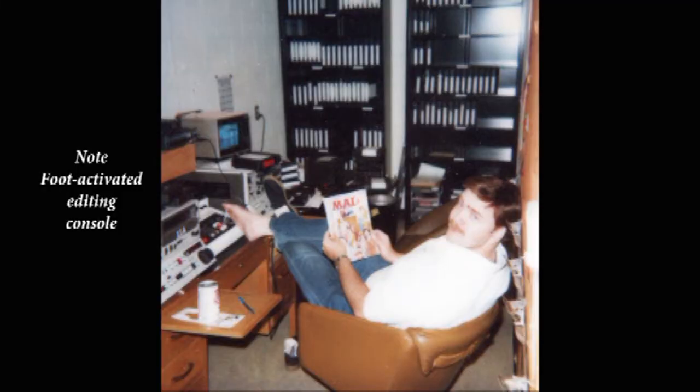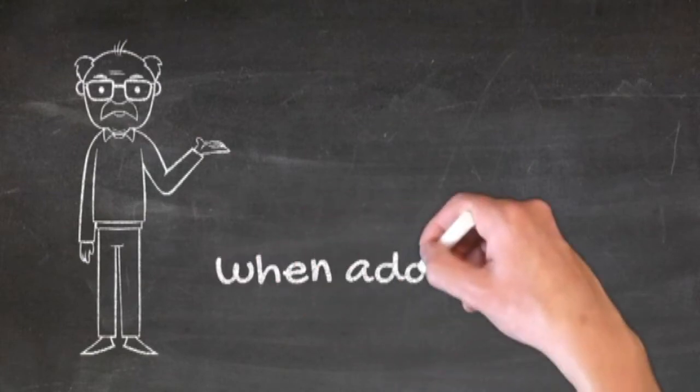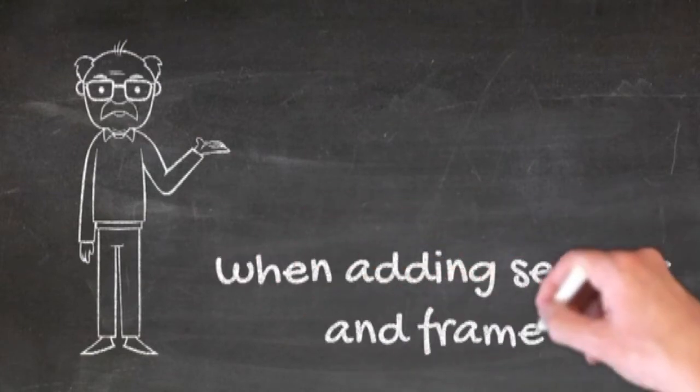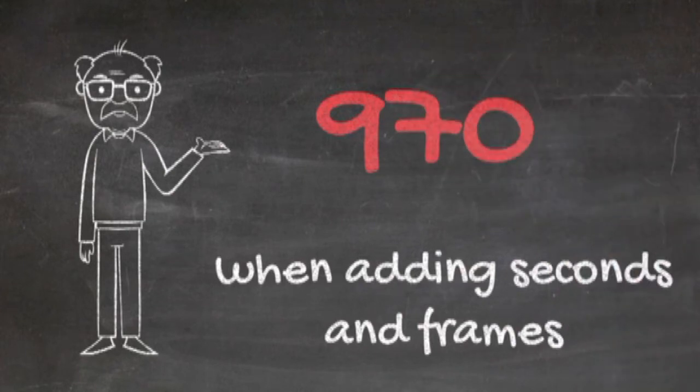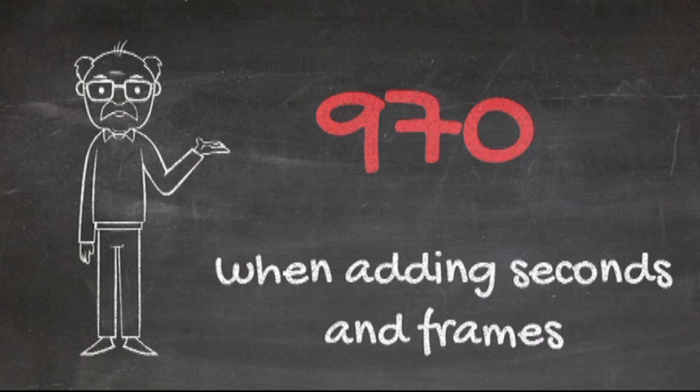Now I use this method for my entire career in television, not just for adding minutes and seconds but also for adding seconds and frames. There are now 60 frames in a TV second, but originally there were 30. So all I needed to do was use the number 970 as the key constant rather than 940. That would add one to the seconds column and take away 30 from the frames column.